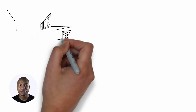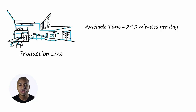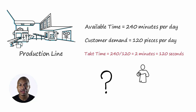Let's take an example. You are in charge of a production line that has an available time of 240 minutes per day. Customer demand is 120 pieces per day. TACT time is equal to 240 divided by 120, which equals 2 minutes, or 120 seconds. This means that ideally, a customer shows up at the gate of your production line every 120 seconds to pick up a purchased piece.